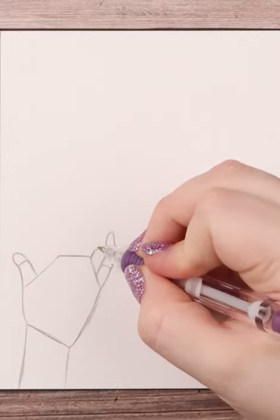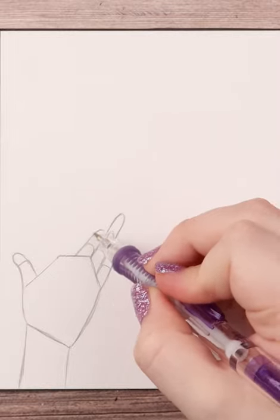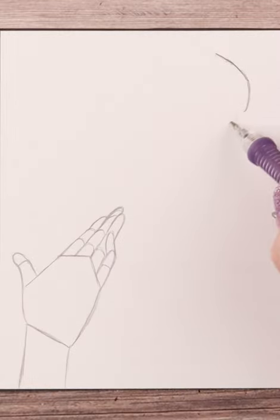So I start out with that same sort of peculiar shape of the palm for both of these hands and I go ahead and draw in the sections of each of the fingers.